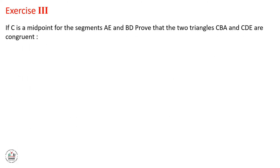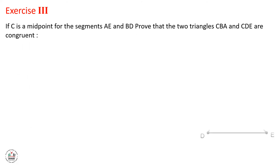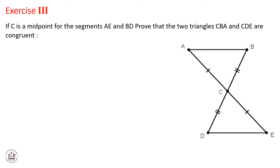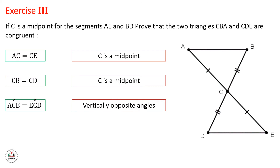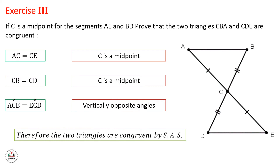Exercise 3: If C is a midpoint for segment AE and segment BD, prove that the two triangles CDA and CBE are congruent. We know that AC equals CE, because C is a midpoint for segment AE. And CB equals CD, because C is also a midpoint for segment BD. Angle ACD equals angle ECB, because these two angles are vertically opposite angles. Therefore, the two triangles are congruent by Side-Angle-Side.